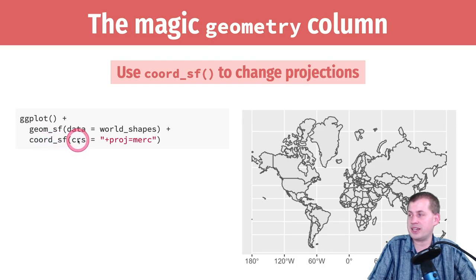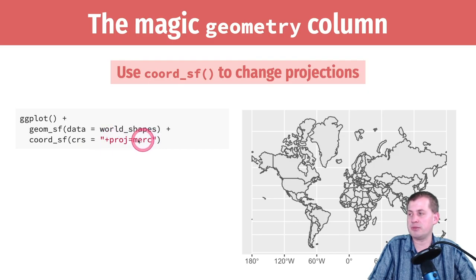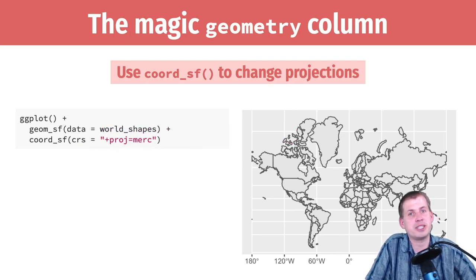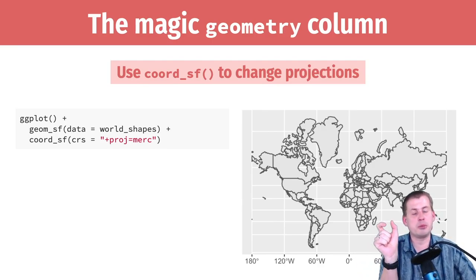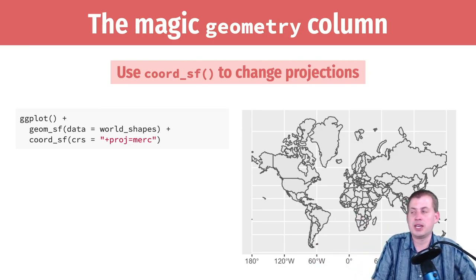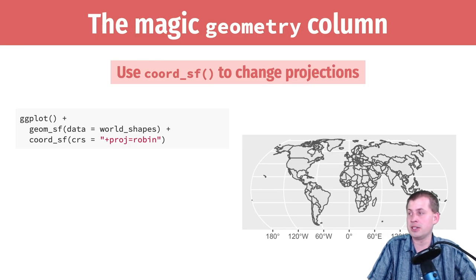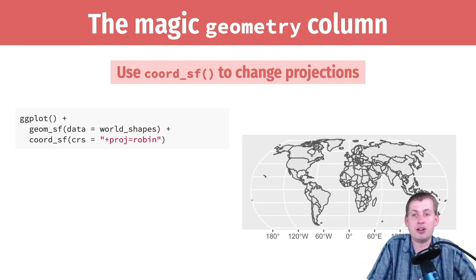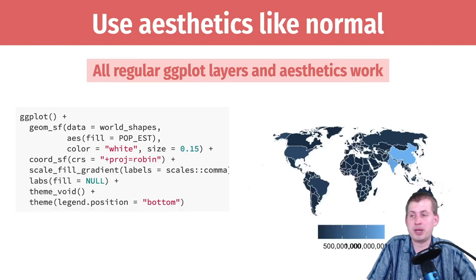Because it's regular ggplot, you can add other layers, change labels, change themes. Changing the map projection is really easy — use coord_sf and set the crs (coordinate reference system) to a magic incantation you can get from websites that list all projections, and it will automatically transform all the numbers in the geometry column into whatever they need to be for that projection. For example, to use Mercator just set the appropriate CRS code. To switch to the Robinson projection, just change to projection equals Robinson — and there's your Robinson map, just like that.